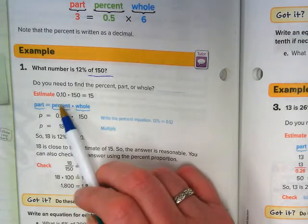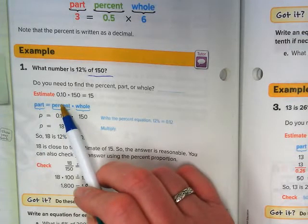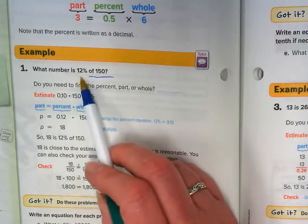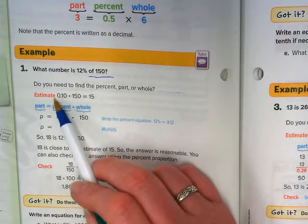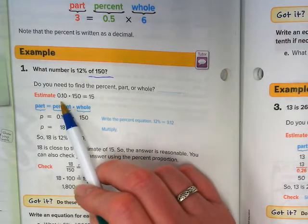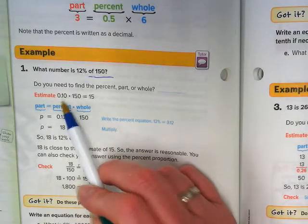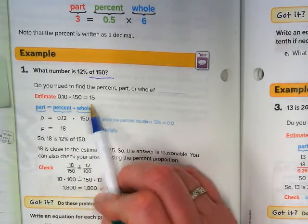So in this situation, we're going to estimate 12% is close to 10%. So the estimate here is 0.10 for 10% times 150 is 15.